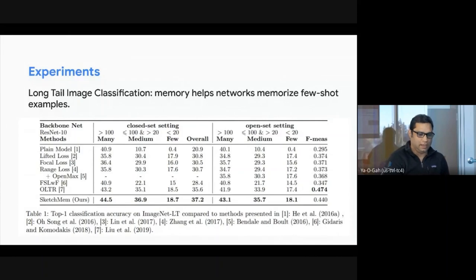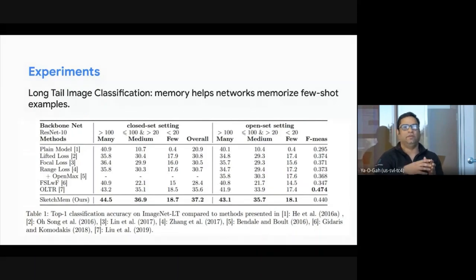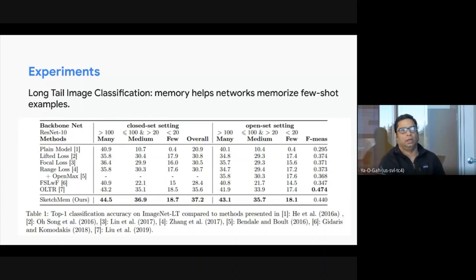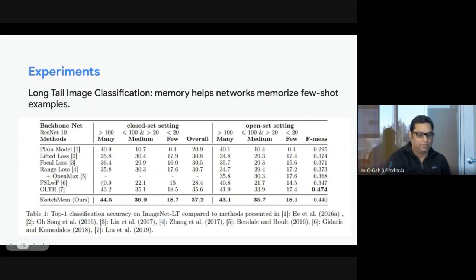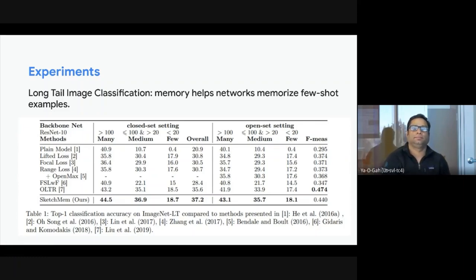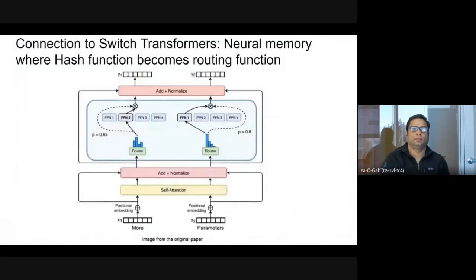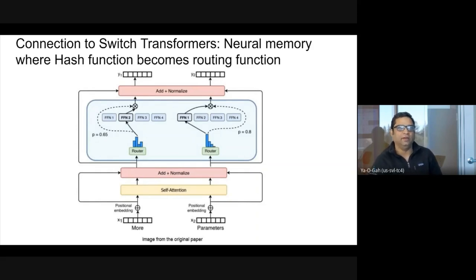Similar experiments were done for image classification — particularly long-tail image classification, where you have lots of long-tail classes. By attaching a hash table of certain size at the last layer before the softmax, we found that accuracy on tail classes was much better — even better than some methods specifically handcrafted for this problem. There's also a meaningful connection between neural memory and switch transformers.